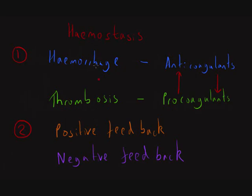If the system moves away from equilibrium, negative feedback has to come into place and move it back to a central point by negatively feeding back to whatever process is making the change happen. So we've just described the negative feedback that has to exist in haemostasis mechanisms, and this is achieved by the balance between anticoagulants and pro-coagulants.